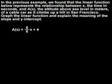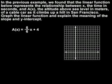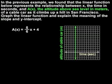To graph the linear function, let's start by setting up a coordinate system. Since x represents the time in seconds, we label our x-axis time in seconds. And since a of x represents the altitude of the cable car in meters, we label our a of x-axis altitude of cable car in meters.